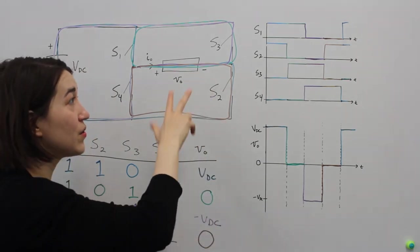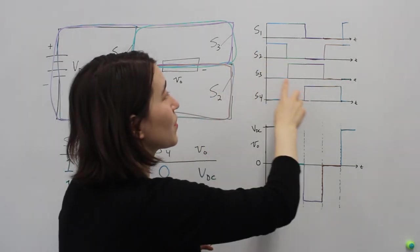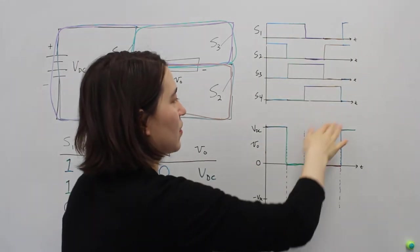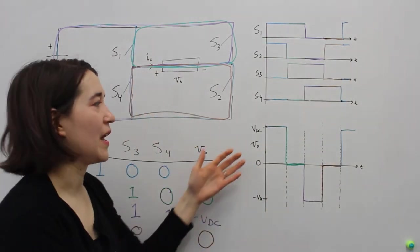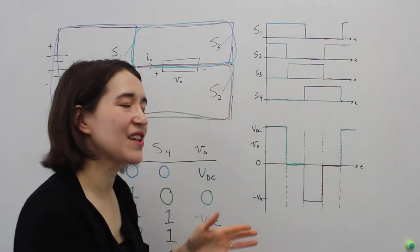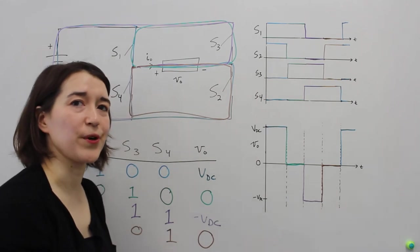Using those switches and going through the switching states, we can actually create three different levels and change those signals in an intelligent way to create the waveform that we want at the output.